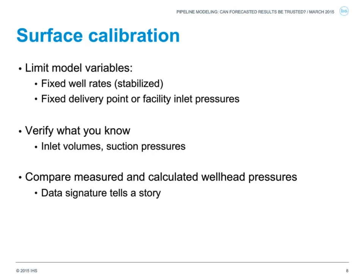It is always important, once you enter your data into the model, to limit your variables so you can really determine where the difference is between the model and what is actually happening in the field. Enter the data that you know — enter well rates as fixed well rates, enter delivery point pressures, suction pressures, or inlet facility pressures all as fixed pressures. This allows you to focus on what's happening on the pipeline segments. Once you generate the model, verify what's coming into those facilities, verify suction pressures and inlet rates, then use data diagnostics to look for overall trends and data signatures.